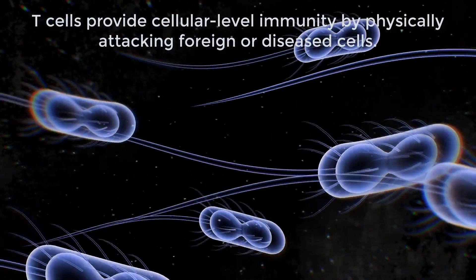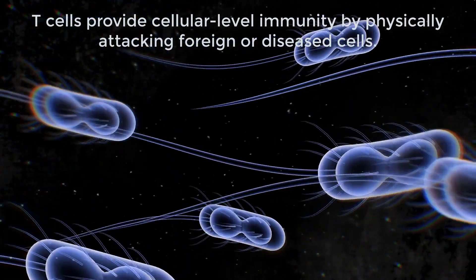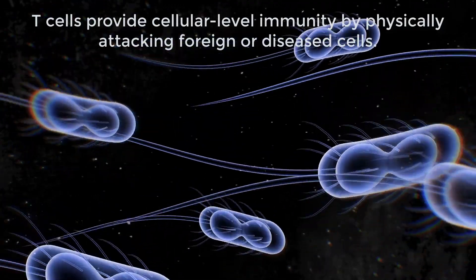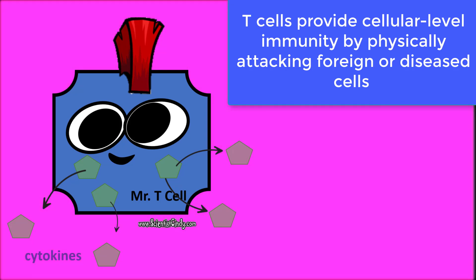T cells provide cellular level immunity by physically attacking foreign or diseased cells. There are many different types of T cells; they screen the body looking for foreign invaders, and if one is found, they release cytokines which produce a cascade of events that trigger different immune responses.